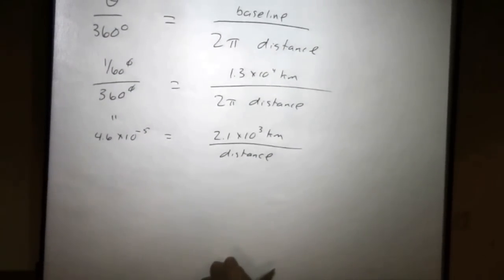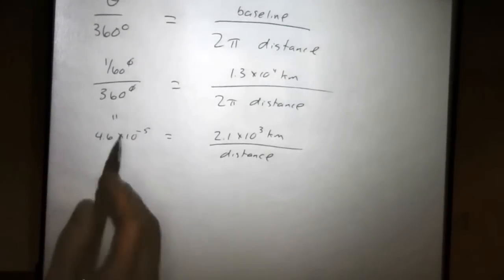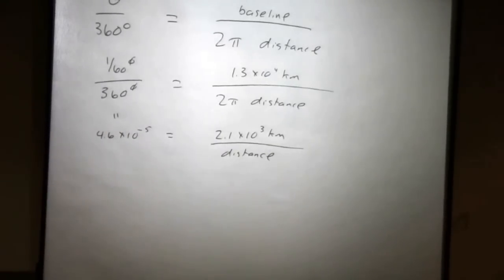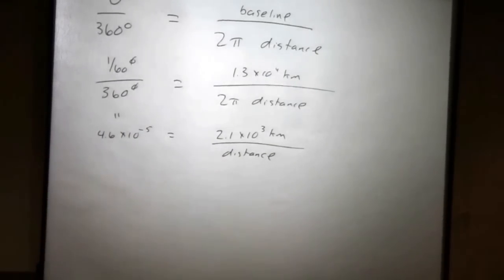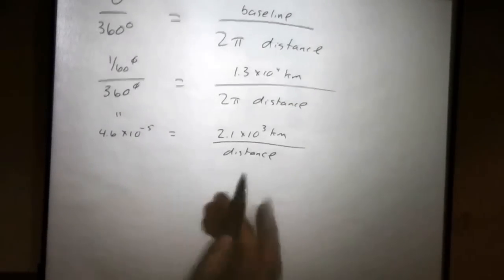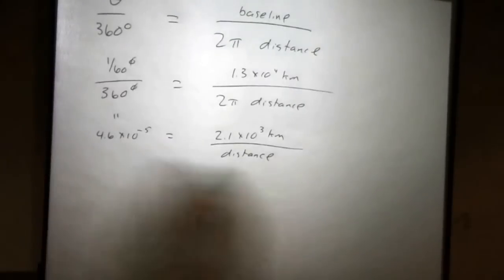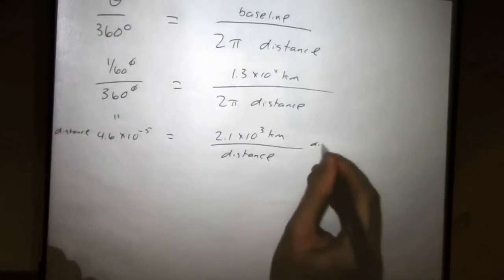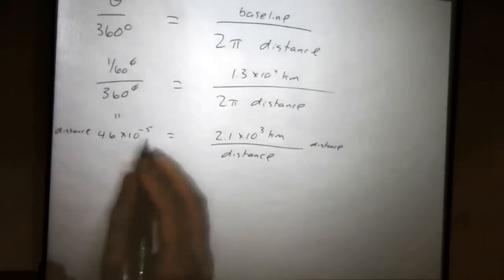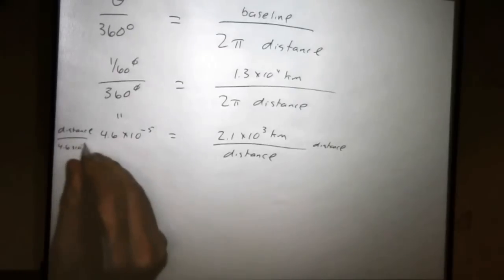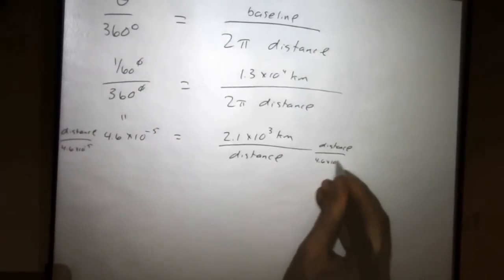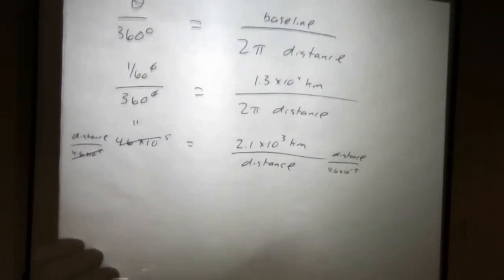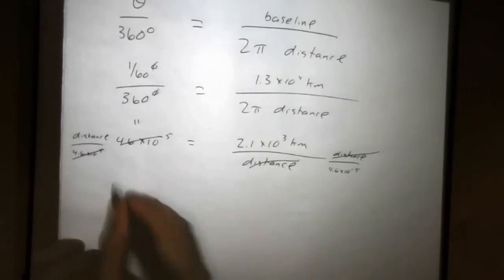Now, to solve this, we need to solve for distance. So let's get distance by itself. We're going to multiply both sides by distance, and divide both sides by 4.6 times 10 to the minus 5. The reason we're doing this is these will cancel out, giving us a distance by itself. Now, on this side, distance cancels out. All make sense so far? Just a little bit of algebra, practice in solving the equation.